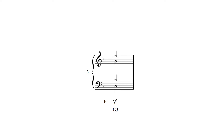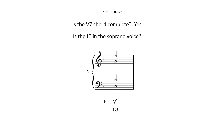However, what happens if the V7 chord is complete? This presents a second possibility, scenario number two, represented as example B. Still, ask yourself for the sake of habit the first question: is the V7 chord complete? If the answer is yes, you need to ask and answer one final question: is the leading tone in the soprano voice? If the answer is yes, resolve to a tonic triad as follows.